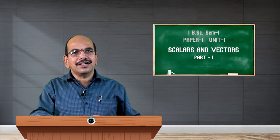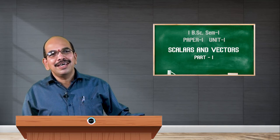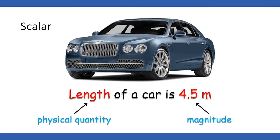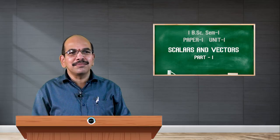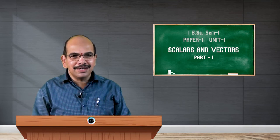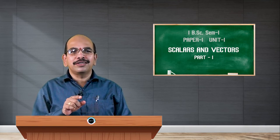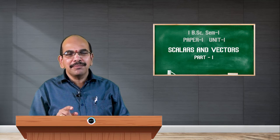Now let us take another live example. If you look at a car, suppose the length of a car is 4.5 meters. Here the length is a physical quantity — you can take it as scalar — and it has its own magnitude: 4.5 meters. 4.5 is the magnitude and meter is the unit. So length is a scalar quantity, particularly a physical quantity with magnitude 4.5 and unit meters.